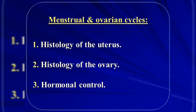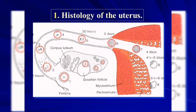We must give an idea about the histology of the uterus. The uterus has three layers. The innermost layer is the endometrium, which contains the endometrial glands.